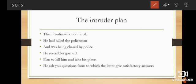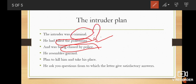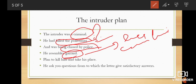Now we come to know about the intruder's plan. The intruder was a criminal. He had killed a policeman and was being chased by the police. He resembles Gerrard, and that was the reason he came to his house. His plan was to kill Gerrard and take his place.